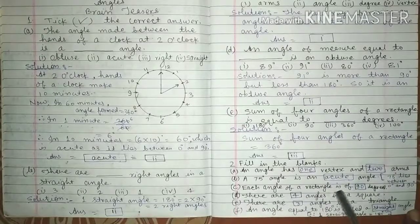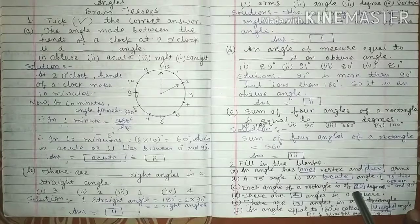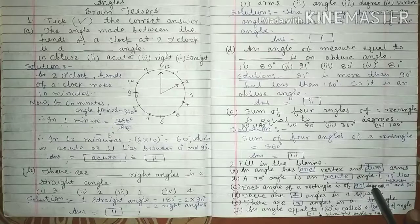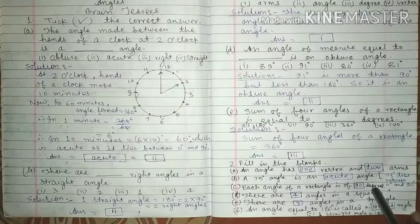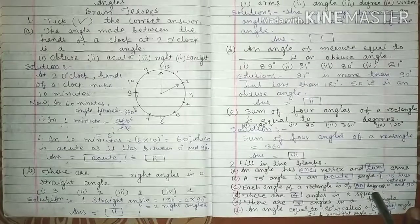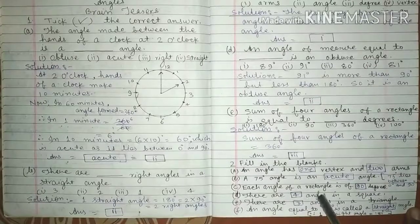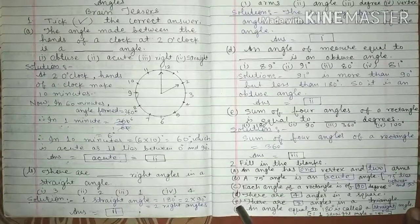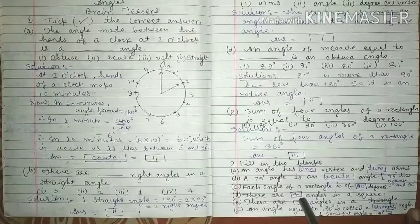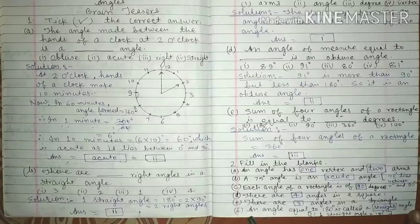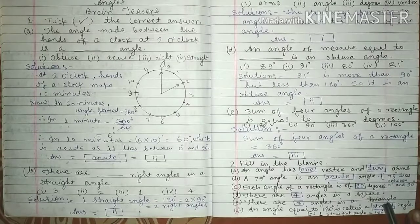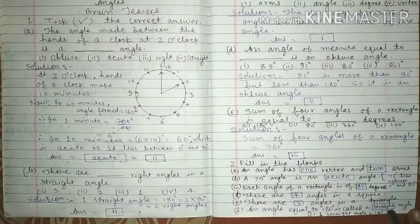C. Each angle of a rectangle is of 90 degree, because a rectangle has 90 degree, that is right angle at each vertex. Question number D. There are how many angles in a square? There are 4 angles in a square. We fill here 4. E. There are how many angles in a triangle? There are 3 angles in a triangle. So we fill here 3. And angle equal to 180 degree is equal to a straight angle. We fill here a straight. Why? Because one straight angle equals to 180 degree.